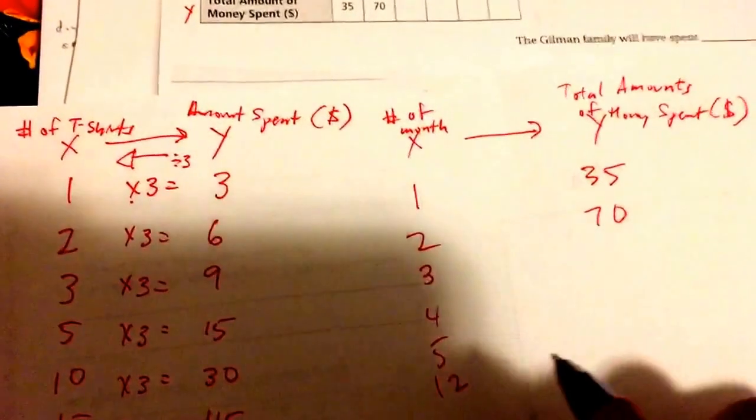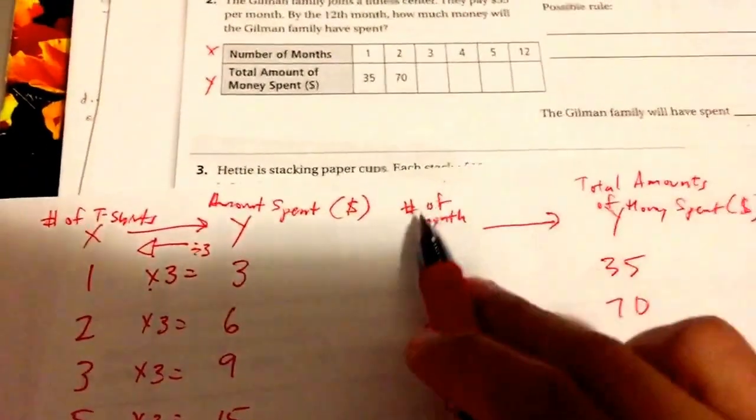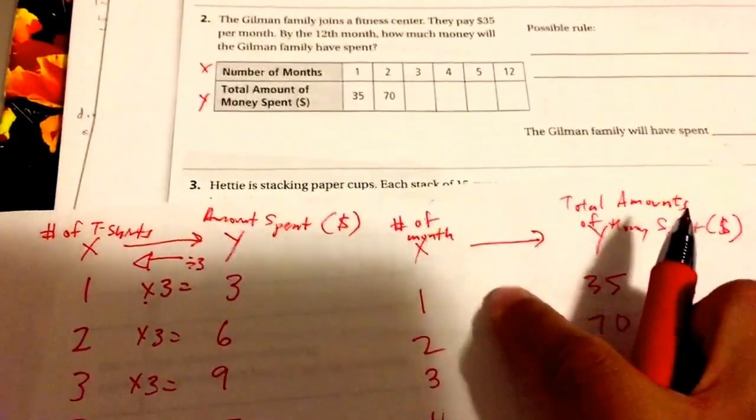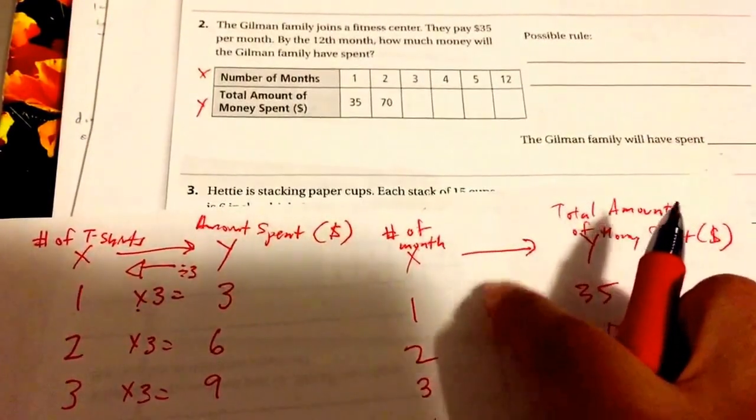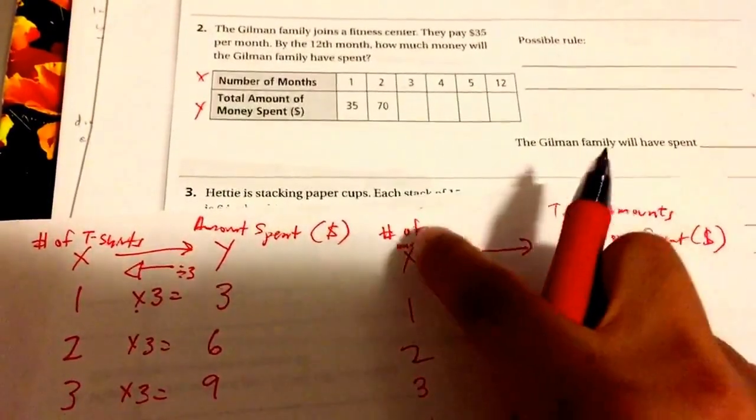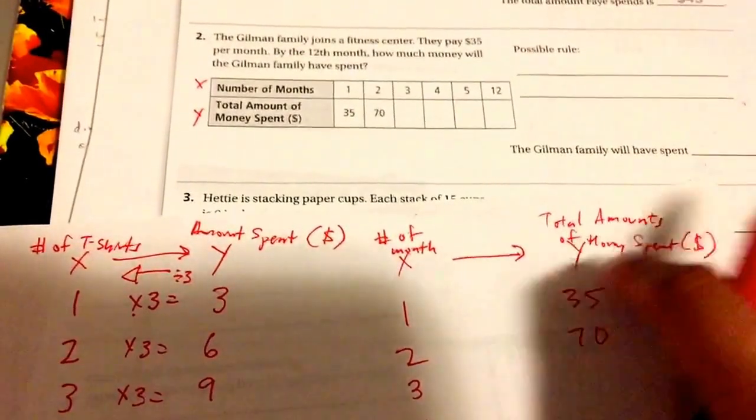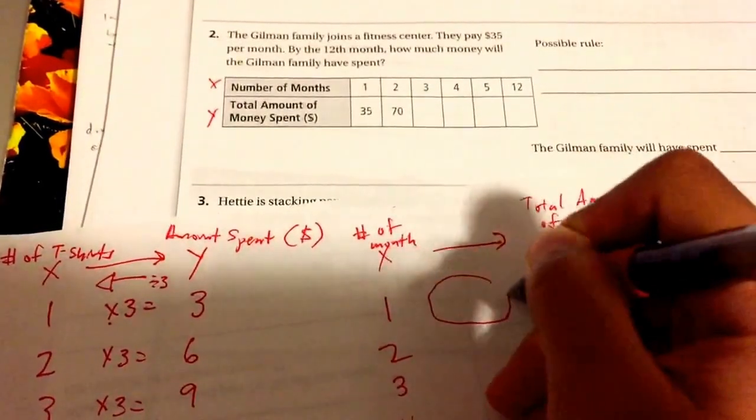After you solve that, make sure to find your possible rule by using these to help you. Whatever you did here—whether you added something, you multiplied, you divided—what did you do here? You added five, subtracted five, multiplied by the number of months to find the total amount of money spent? So that's how you're going to find your rule. You're going to do whatever this rule is here by the number of months to find the total amount of money spent.